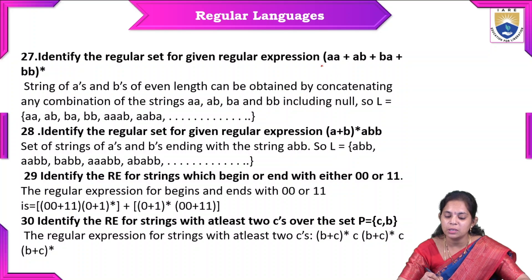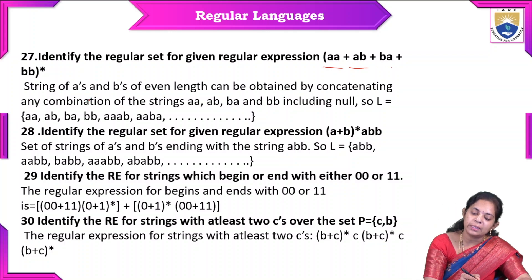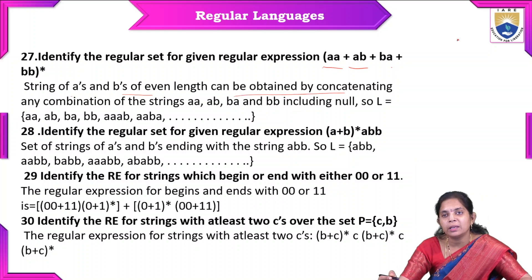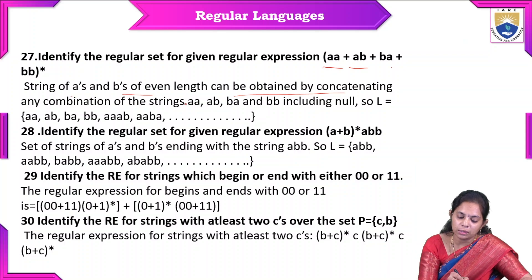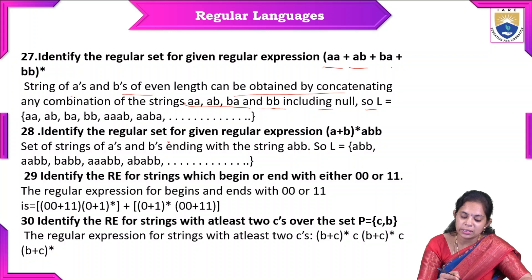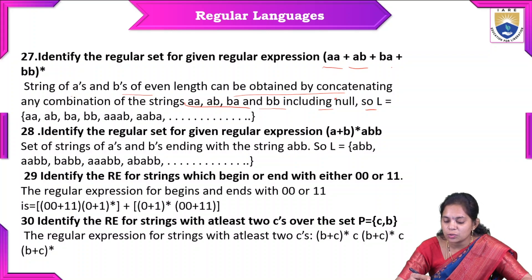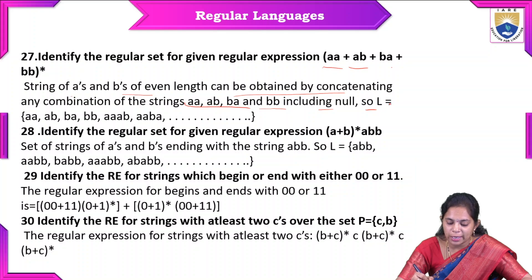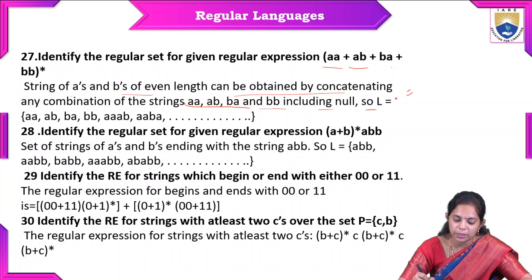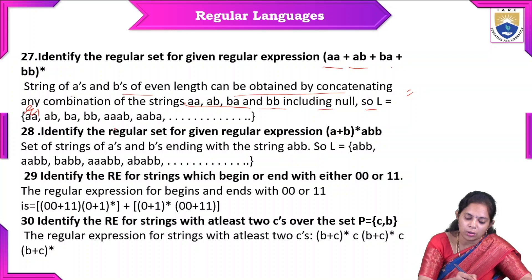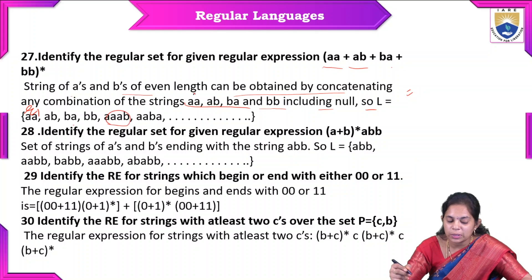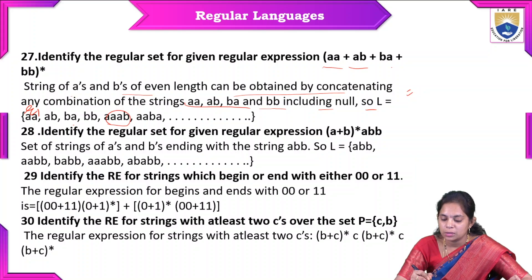Another example: identify the regular set for (AA+BB)*. By seeing this expression, we can say strings of A's and B's with even total length can be obtained by concatenating AA and BB substrings. The language includes: epsilon, AA, BB, AABB, BBAA, AAAA, and so on — all strings of even length over {A, B}.